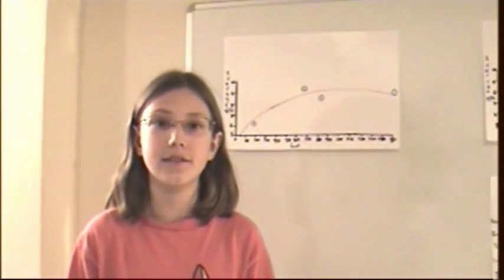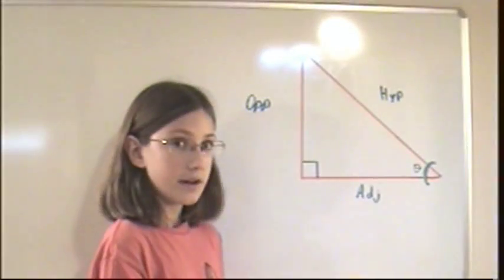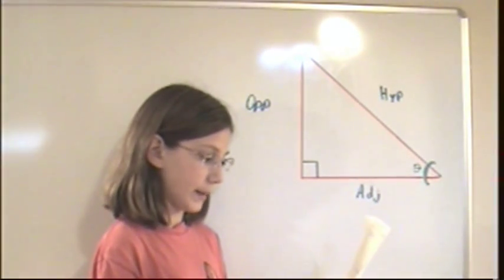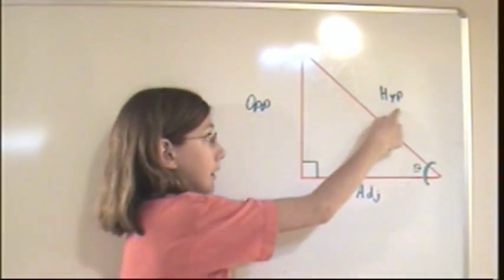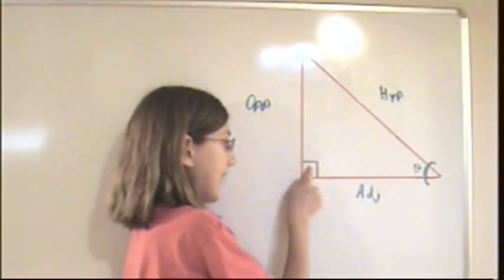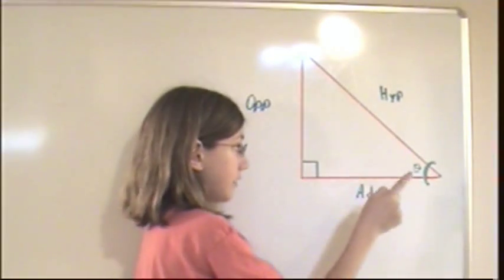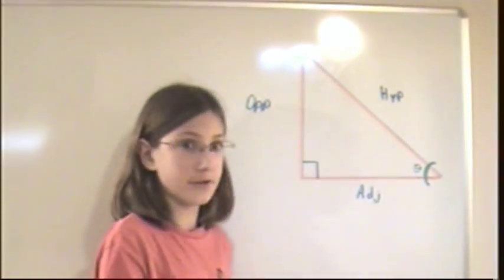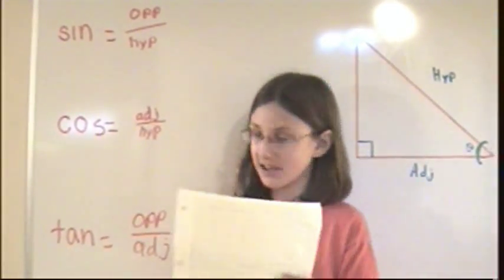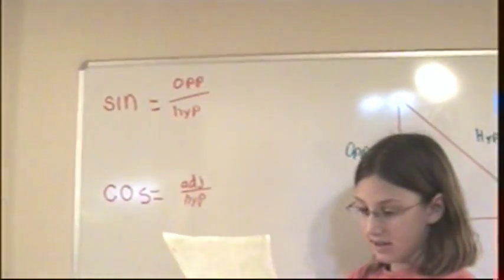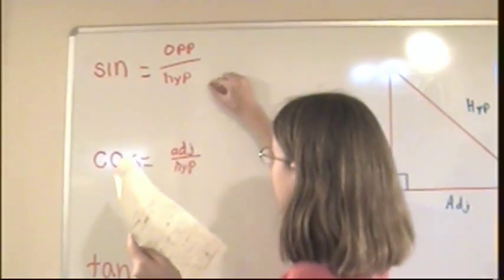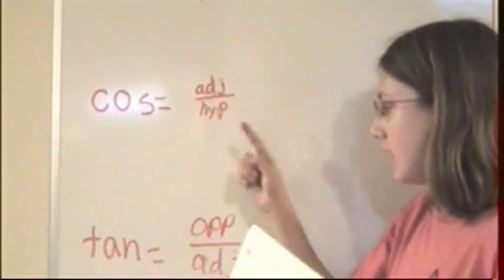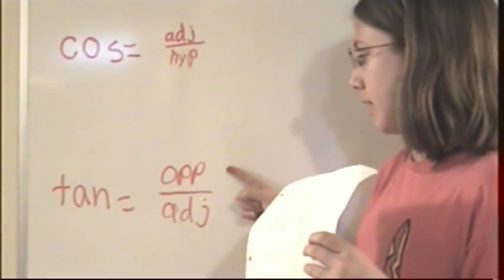Now let's talk about things that have velocity that goes much faster, like rockets. To find out the rocket's velocity, I will need to use trigonometry. Trigonometry is how sides and angles of a right triangle are related. The sides are the hypotenuse, which is the side opposite the right angle; the opposite side, which is the side opposite the angle we are interested in — in this case, theta; and the adjacent side, which is the leftover side. From these, you can have sine, cosine, and tangent. Sine is the length of the opposite side divided by the hypotenuse. Cosine is the length of the adjacent side divided by the hypotenuse. And tangent is the length of the opposite side divided by the adjacent side.